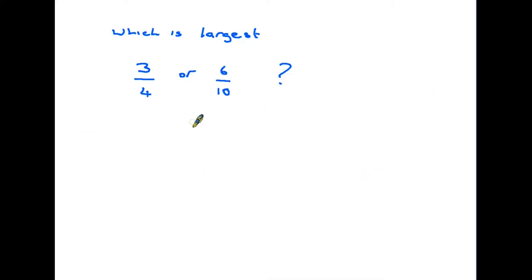Let's have a look at a situation where things get slightly more complicated. Here we've been asked which is largest. Now in this case both the top numbers and the bottom numbers are different so we can't carry out either of the processes that we've just looked at.